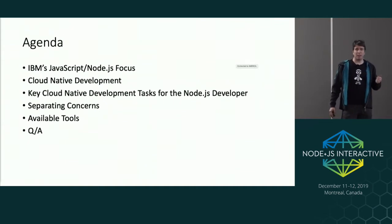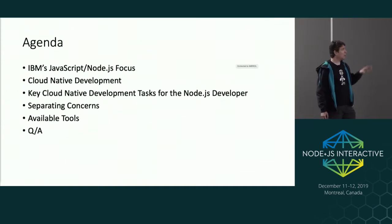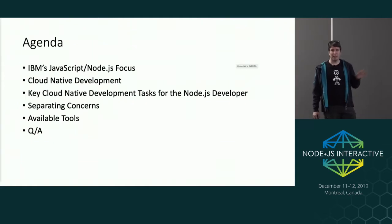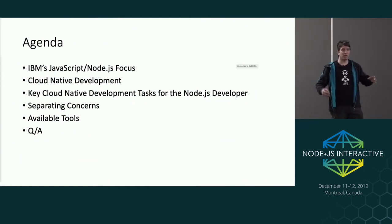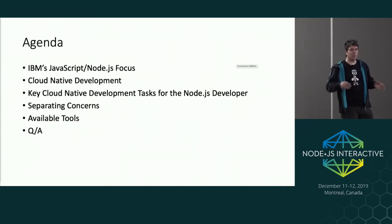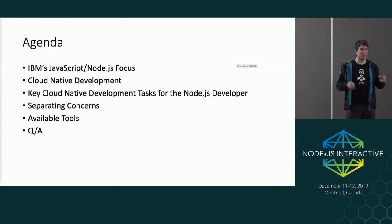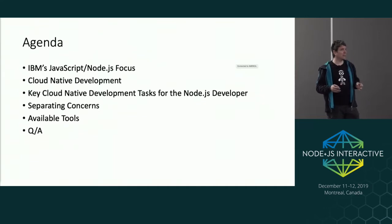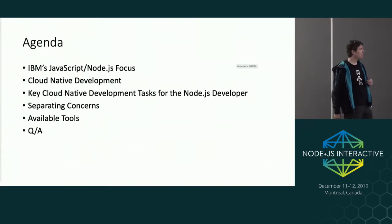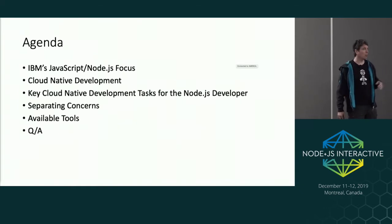Just before I get started, here's what I'm going to talk about. I'll start with IBM's JavaScript involvement and our strategy, then talk about cloud-native development and the key tasks you need to be aware of as a Node.js developer coming to the Kubernetes world. I'll talk about separating concerns, and finally touch on some available tools you might be interested in.